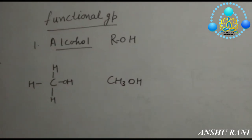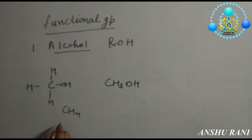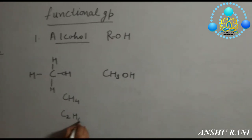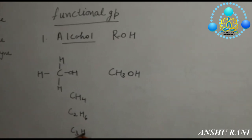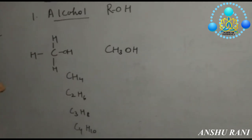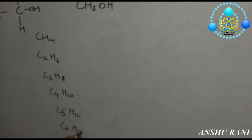It is very easy to write the names. First of all we will write the names of alkane series: CH4, C2H6, C3H8, C4H10, C5H12, C6H14 like this.